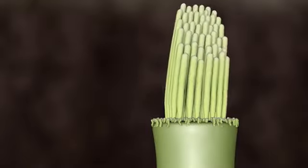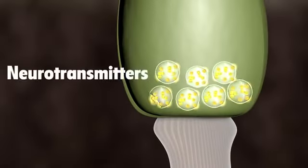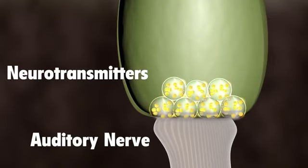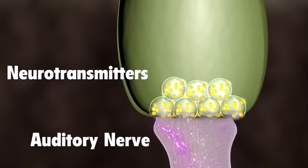As the hair bundles are moved, ions rush into the top of the hair cells, causing the release of chemicals at the bottom of the hair cells. The chemicals bind to the auditory nerve cells and create an electrical signal, which travels along the auditory nerve to the brain.